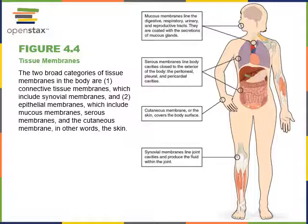The cutaneous membrane is the skin. It has a stratified squamous epithelium that contains keratin. A stratified squamous epithelium has multiple layers — that's what stratified means — and the surface cells are flat, or squamous. This stratified squamous epithelium forms the epidermis, the superficial layer of the cutaneous membrane. Underneath that, connective tissue forms the dermis.